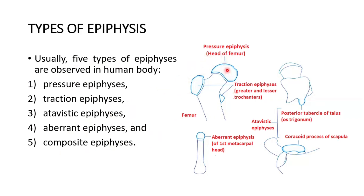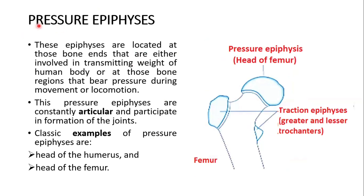This is the pressure epiphysis — the head of the femur. Pressure epiphyses are located at those bone ends that are either involved in transmitting weight of the human body or at those bone regions that bear pressure during movement or locomotion. These pressure epiphyses are constantly articulated and participate in formation of the joints. Classic examples are the head of the femur and the head of the humerus.